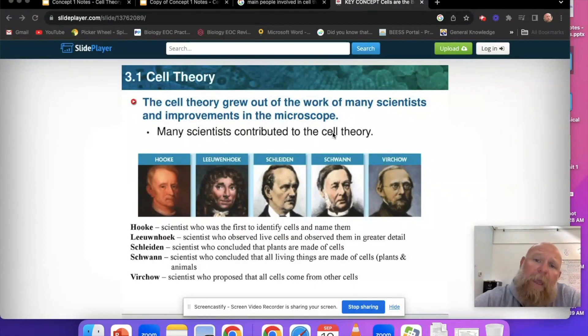This guy right here, Mr. Hook, Robert Hook, interesting dude. He was the first to identify cells and name them. Hook looked at some cork, which is tree bark back in the day, and he noticed that there were these square type cells. He even thought that they looked like prison cells or cells that maybe monks in monasteries would be a part of.